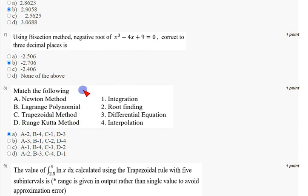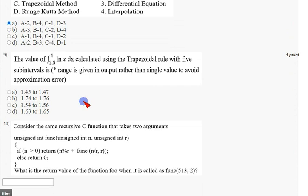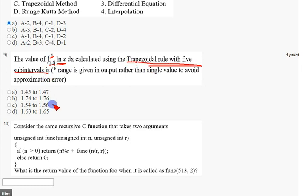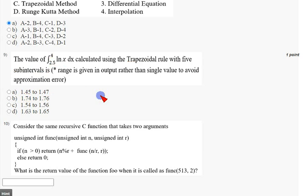Coming to the ninth question — they have given an integration with lower bound 2.5 and upper bound 4 for ln(x), applying the trapezoidal rule with five sub-intervals. The answer I got for the ninth question is option B: 1.74 to 1.76. Mark option B as the correct answer for the ninth question.